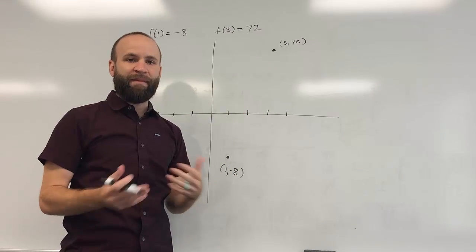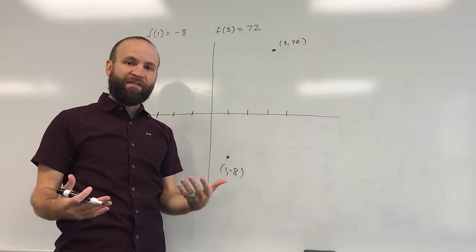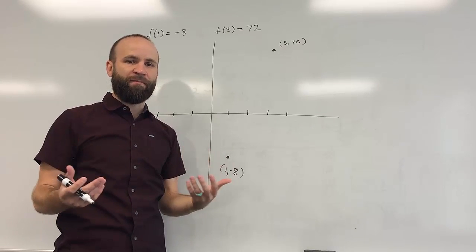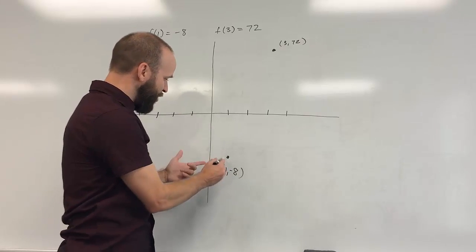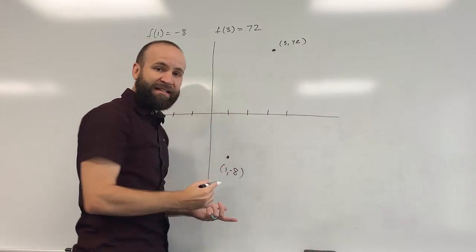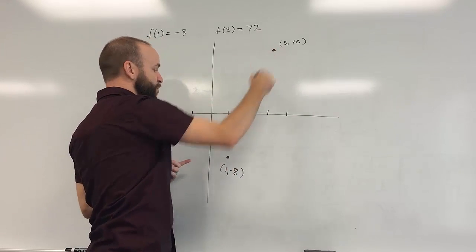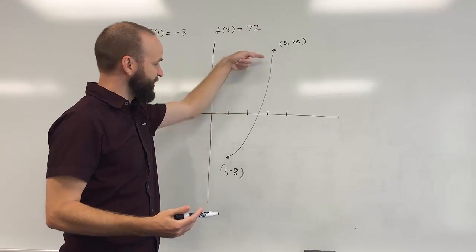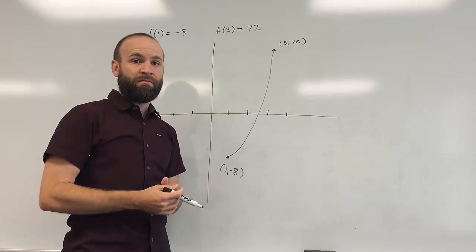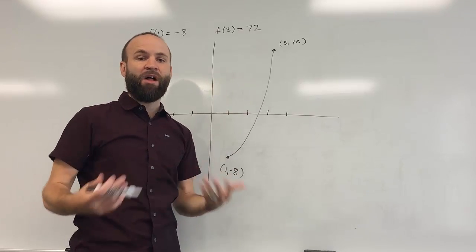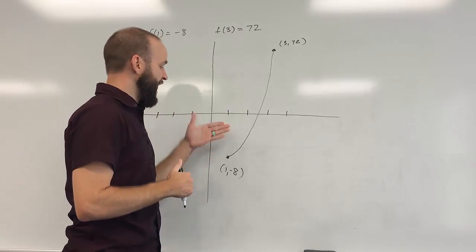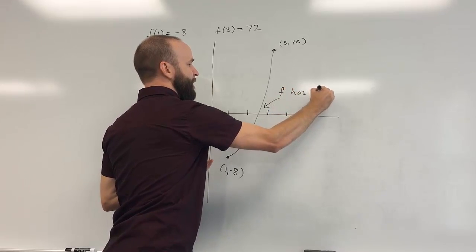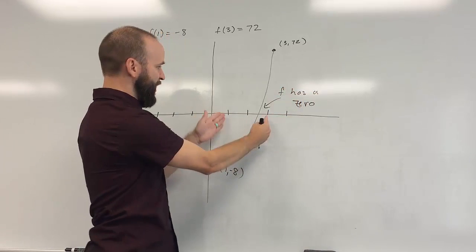If our function takes on a negative value, the graph is below the x-axis. If it takes on a positive value, the graph is above the x-axis. For a polynomial function — which doesn't have any holes, jumps, or gaps — the question we ask is: how do I get from this point to this point without crossing the x-axis? The answer is: that's impossible. To get from one point to the other, we have to cross the x-axis somewhere. The only way to avoid that would be to jump over it, and polynomial functions don't jump. And a point where we cross the x-axis is a zero, so f has a zero somewhere between 1 and 3.